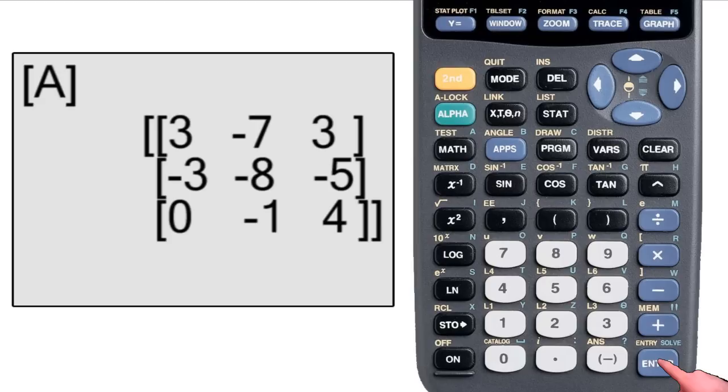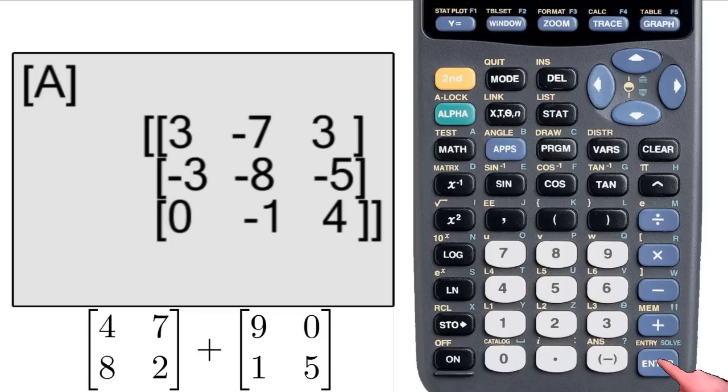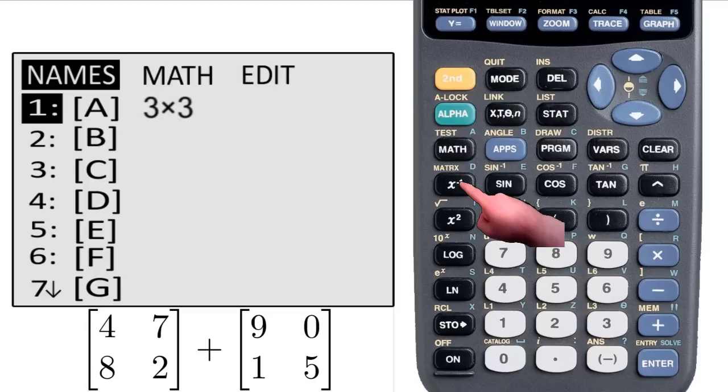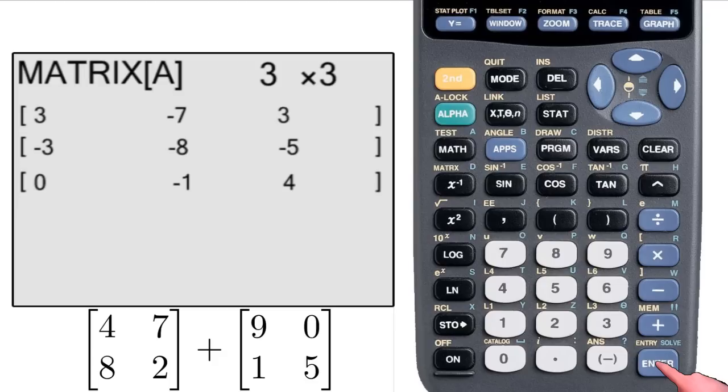Now you can do matrix operations right on the home screen. So I want to add these two matrices. First I input them as A and B, so I go to the matrix menu, go over to Edit, select A, change the dimensions to 2 by 2, input 4, 7, 8, 2.